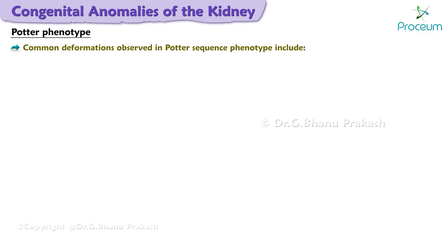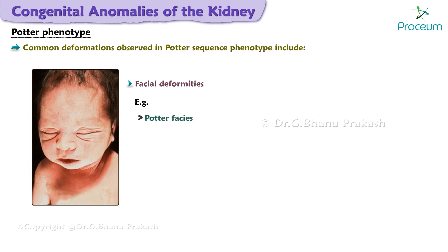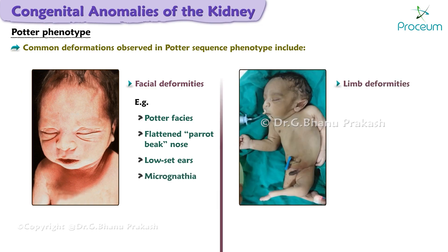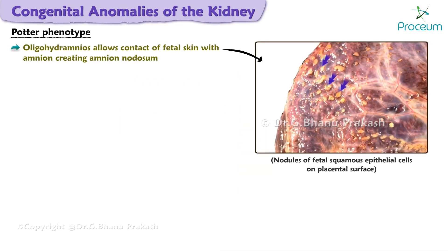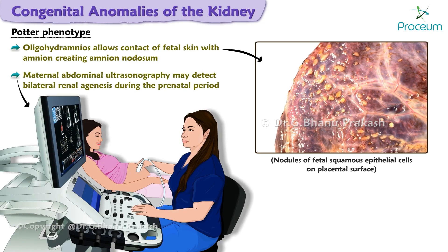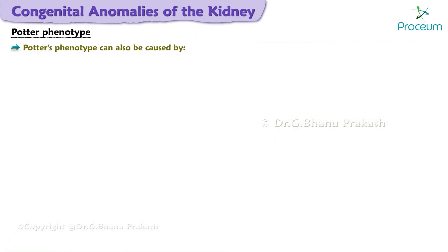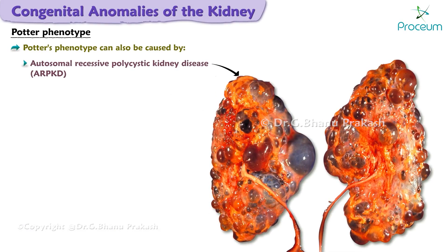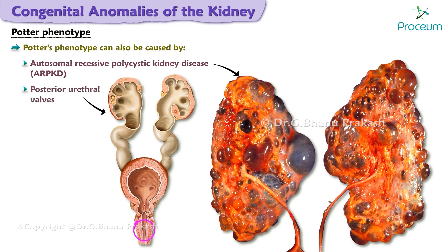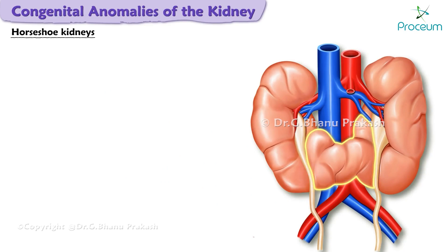Common deformations observed in Potter sequence phenotype include facial deformities — for example, Potter facies, flattened parrot-beak nose, low-set ears, micrognathia — and limb deformities — for example, rocker-bottom feet and talipes equinovarus. Oligohydramnios allows contact of fetal skin with the amnion, creating amnion nodosum, which are nodules of fetal squamous epithelial cells on the placental surface. Maternal abdominal ultrasonography may detect bilateral renal agenesis during the prenatal period. Potter's phenotype can also be caused by autosomal recessive polycystic kidney disease and posterior urethral valves.